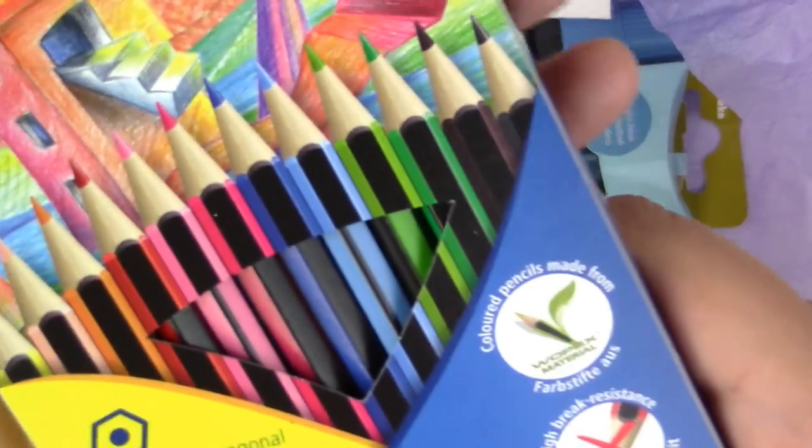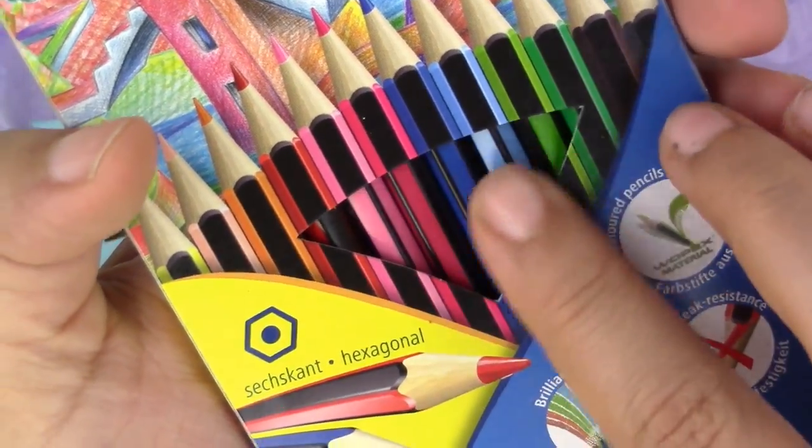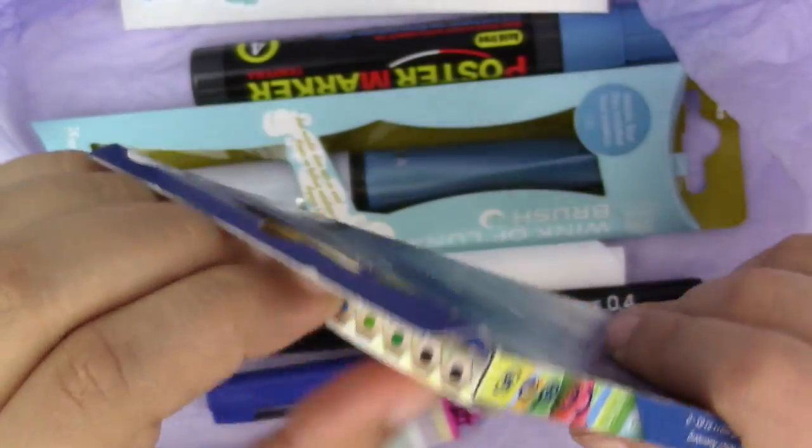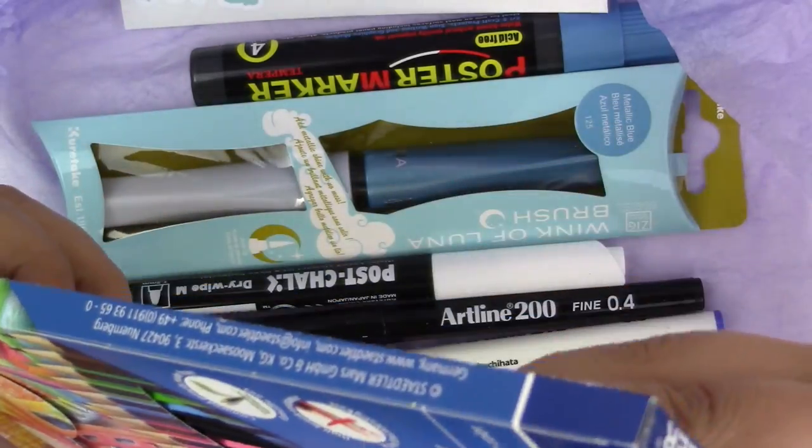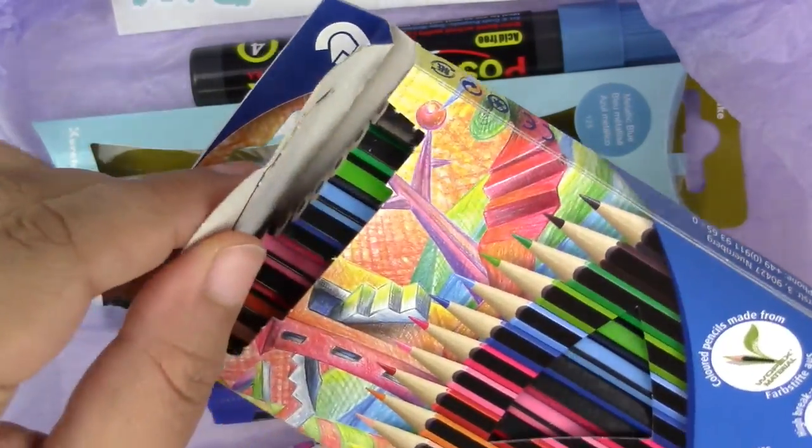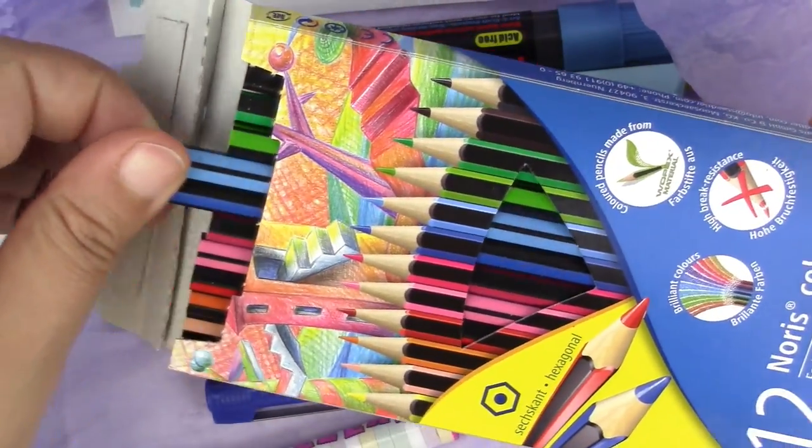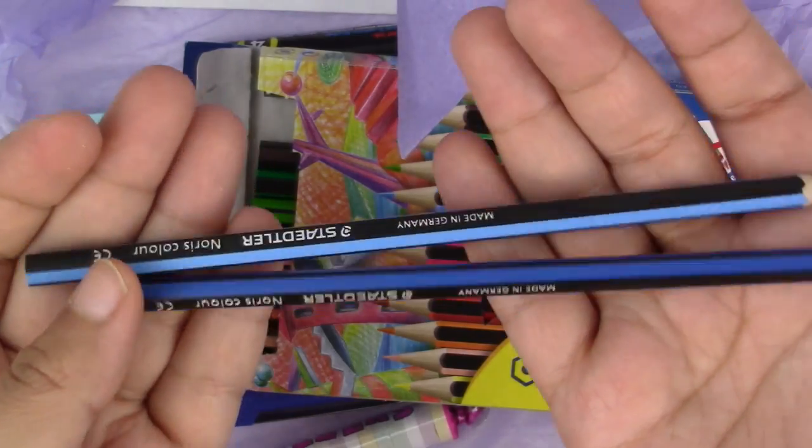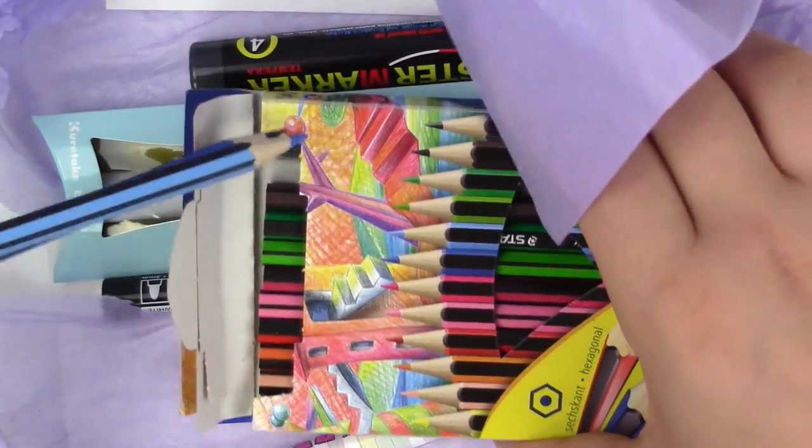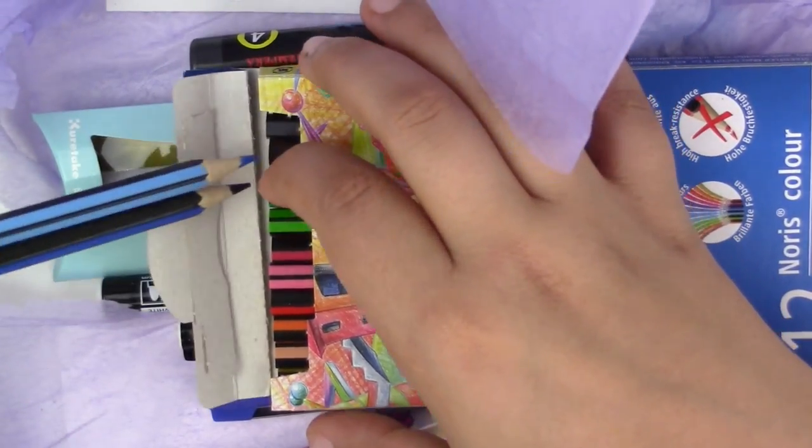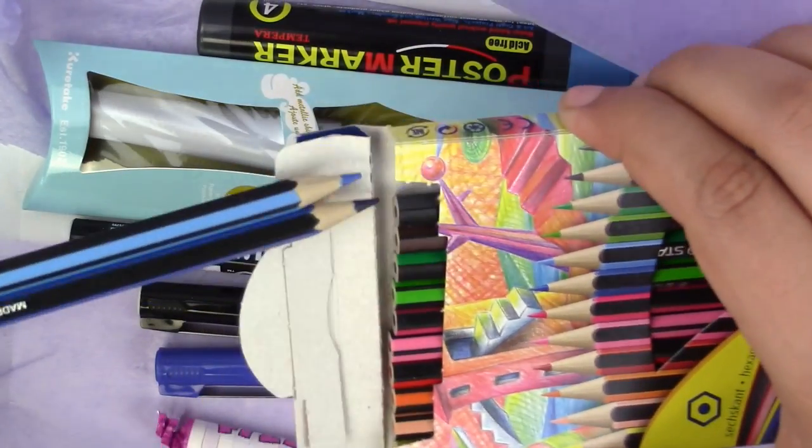Let's look at what we got. We have the Kuretake set. They are hexagonal which means they're not gonna fall off the desk. These are so pretty, made in such a nice way. These are heavy. I did not expect them to be this heavy. I know you guys are gonna freak out and be like why didn't you put them in the right order. I don't know, I don't want to put them in the right order.